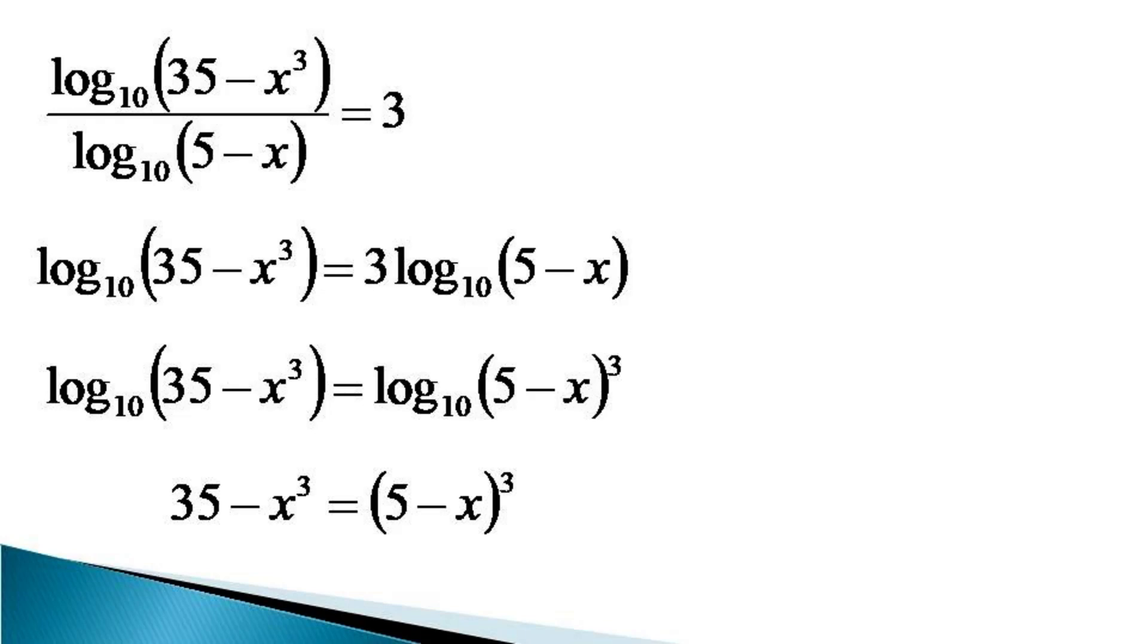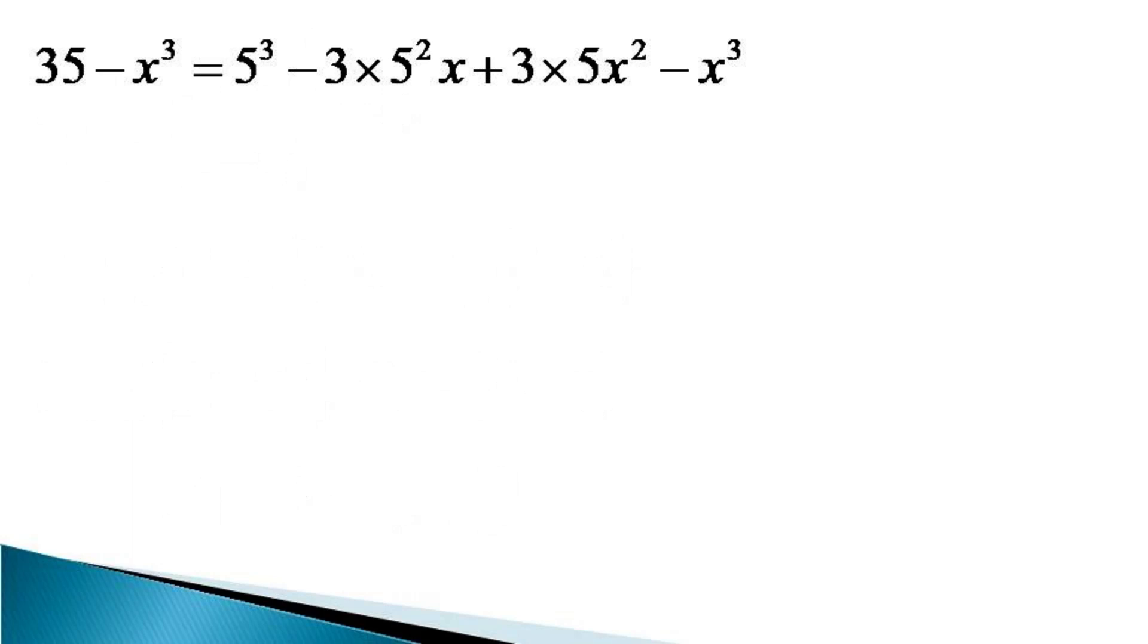Here a cubic term comes, but we will see after expanding the expression on the right hand side what happens to the cubic term. The expansion gives us 35 minus x cube being equal to 5 cube minus 3 into 5 square x plus 3 into 5 x square minus x cube.